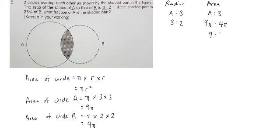If the shaded part is 25% of B, so we know that B is actually 4 units. From here we know it's 4 units, and A is actually 9 units.